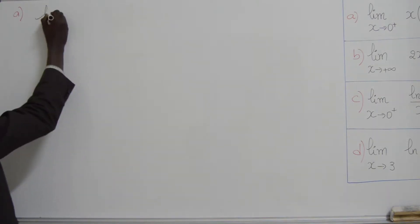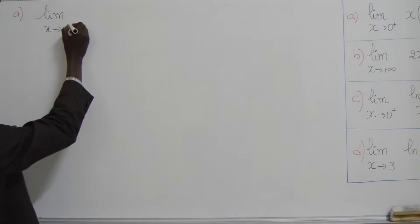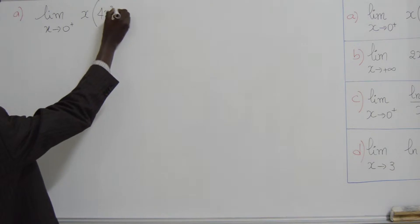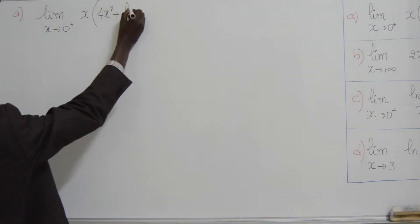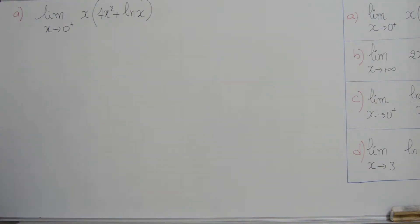On commence par la limite A. La limite lorsque x tend vers 0 plus de 2x, facteur de 4x², plus ln2x.